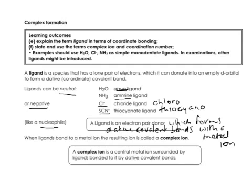All the ligands on this slide are known as simple monodentate ligands. That means they form one dative covalent bond. Each molecule of water can form one dative covalent bond, and each molecule of ammonia can form one dative covalent bond with a metal ion. Note that whilst these are common examples, in examinations you could have other ligands that would also be monodentate.